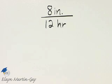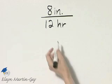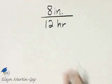Let's write this rate as a unit rate. And remember what that means. That means we want the denominator to be 1 and then whatever the unit is, in our case, hours.